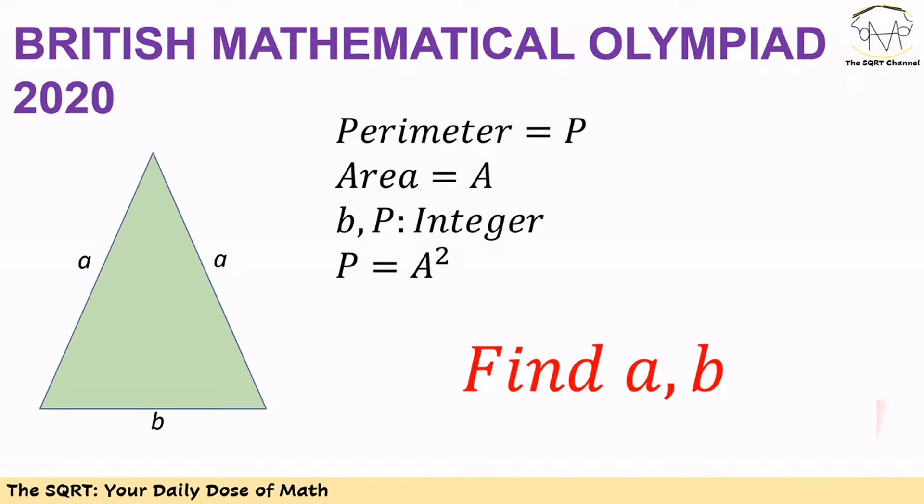Hello everyone, in this video we're going to talk about a problem from the British Mathematical Olympiad 2020. In this problem we have a triangle with two sides a and base b. The perimeter of this triangle is P, the area is A, and we know b and P are integer numbers. We also know P is equal to A squared. We want to find a and b.